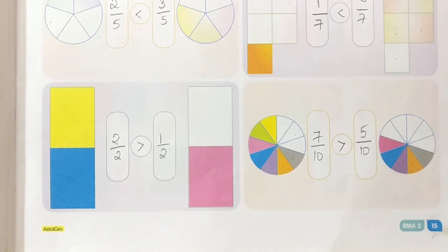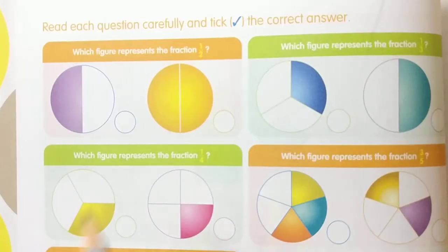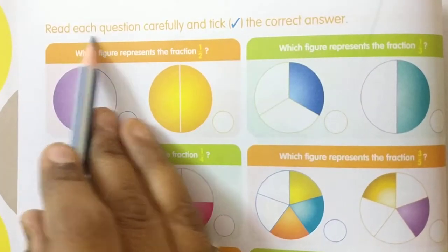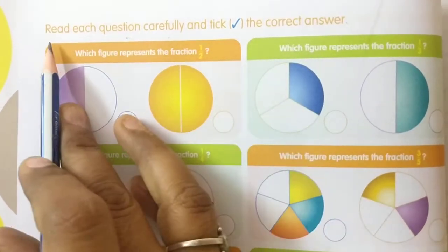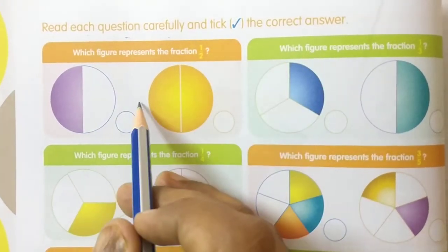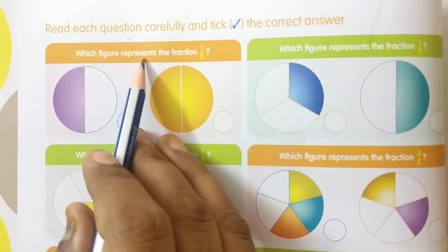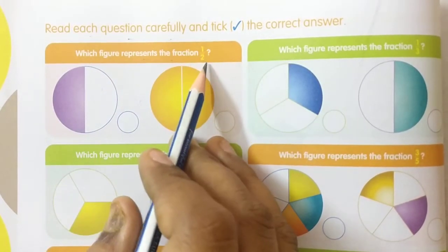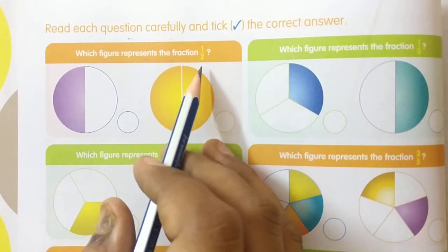Do you understand children? Now turn the page and open page number 16. See the question: read each question carefully and tick the correct answer. Which figure represents the fraction 1 by 2?